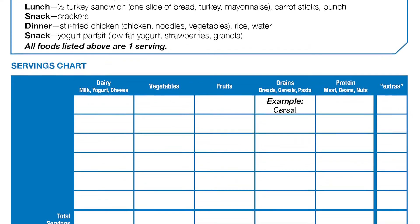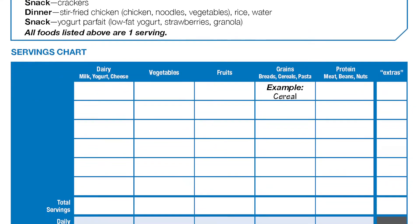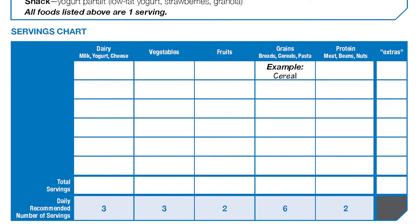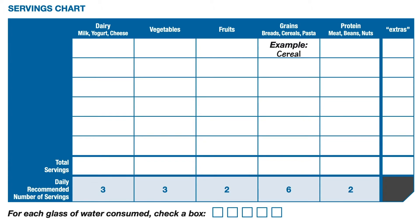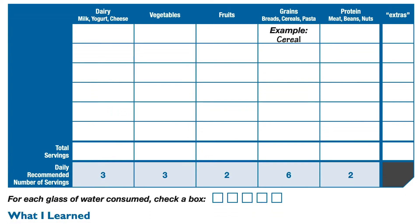All right my friends, next you're going to add up each food group to see how many servings of each food group Sarah had in one day. Now for each glass of water, you're going to mark an X under where it says 'for each glass of water consumed, mark an X.' Go ahead and pause the video to help you fill out this chart.